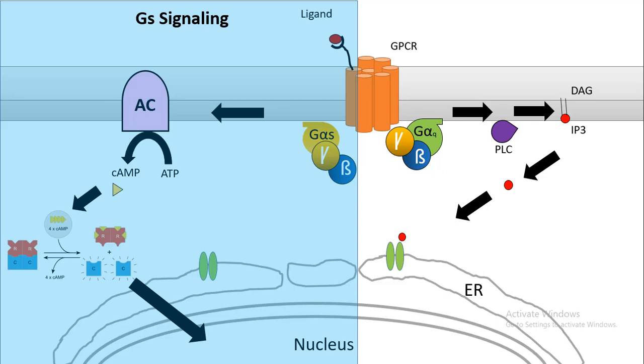Another signaling is GQ signaling, which involves phospholipase C and cleavage of PIP2. It generates IP3. IP3 binds to IP3 receptor on the ER and allows calcium influx from the ER.